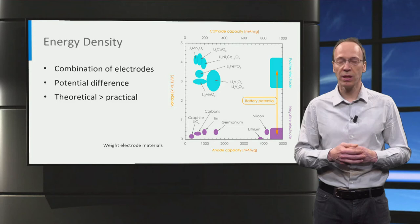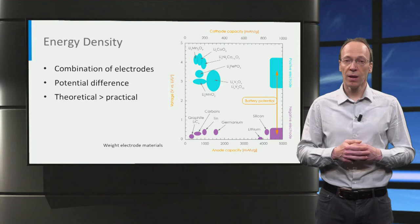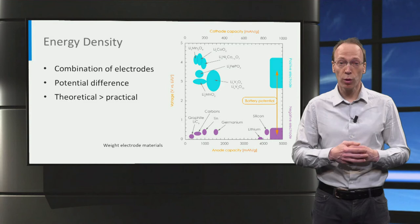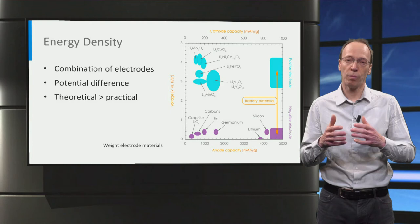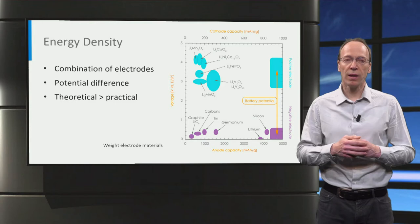The approach of calculating the electrode capacities and the battery energy density is as follows. Imagine we need to store one mole of lithium ions. Then the capacity equals Faraday's constant, approximately 96,500 Coulombs. To store this capacity in a lithium-ion battery, we can determine the amount of moles of electrode materials from the redox reactions and from this their mass. The capacity divided by the weight of the electrode is the specific capacity.